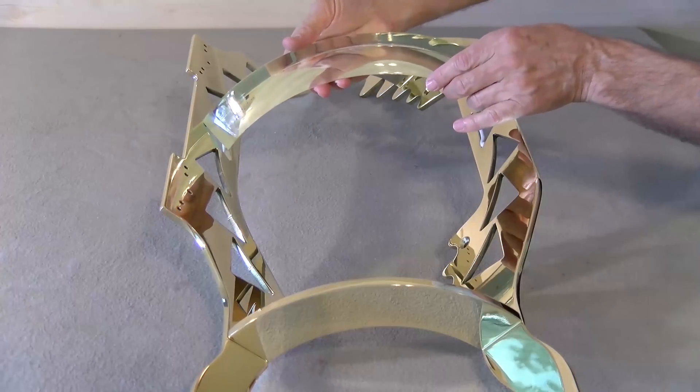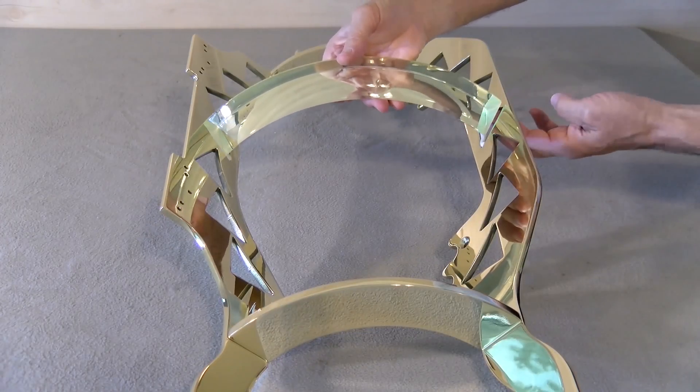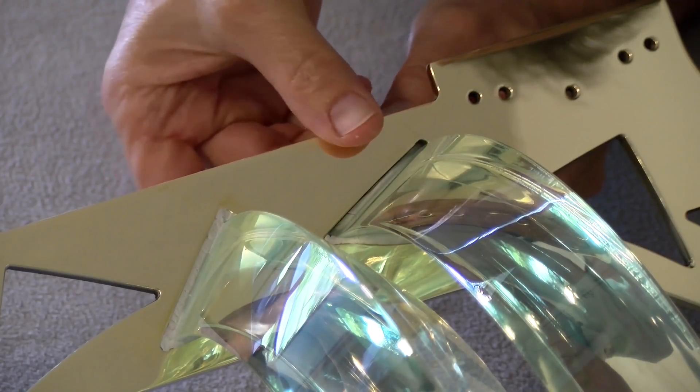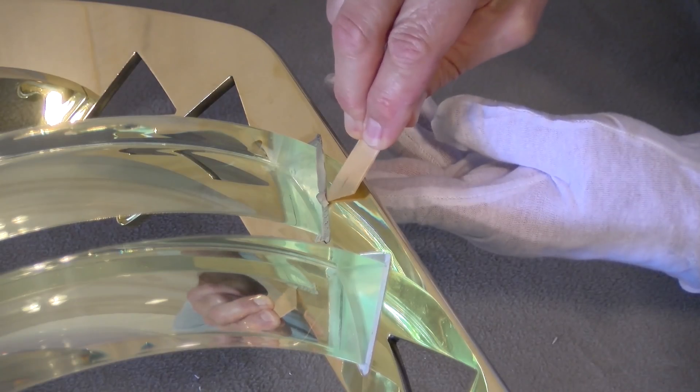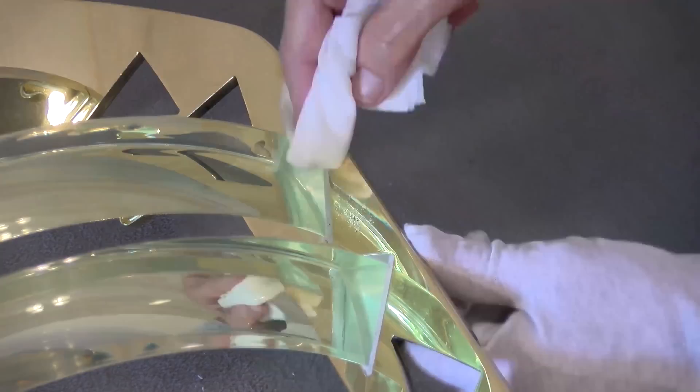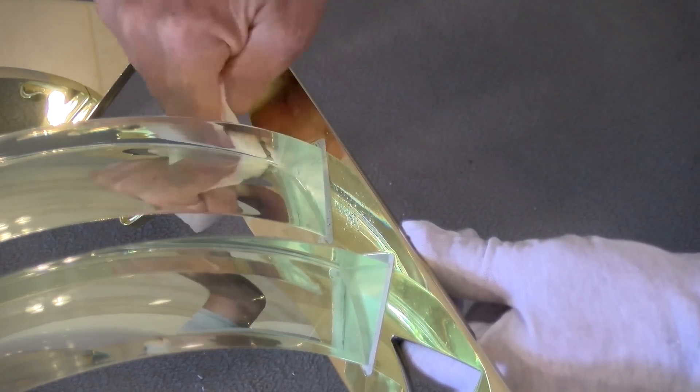The next step is to install the prisms into the brass framework. This is done by a series of epoxies and glass glazing compounds to set the prisms and isolate them from the brass framework.